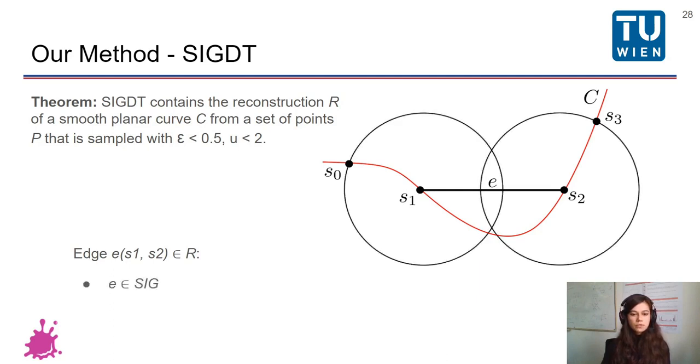In order to do this, we first have to show that it's part of the SIG. And this is true because of the epsilon sampling. S0 is the nearest neighbor of S1 and S3 is the nearest neighbor of S2. Hence, the circles centered at each of these points intersect. So E is part of the SIG. And also, if we center a circle on the middle of the edge E, this edge will contain no other samples. And that means that E is also part of DT. However, I have only offered a really high-level overview of the proof. For more details, please refer to the paper.